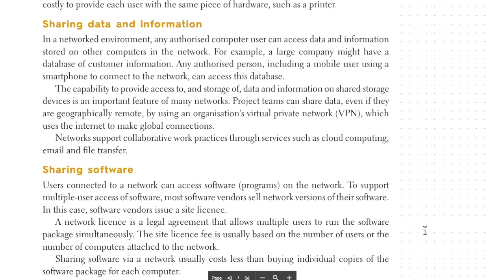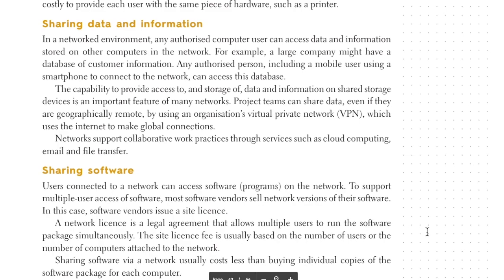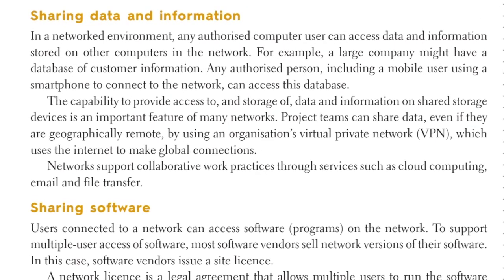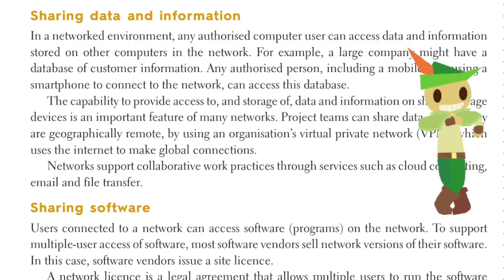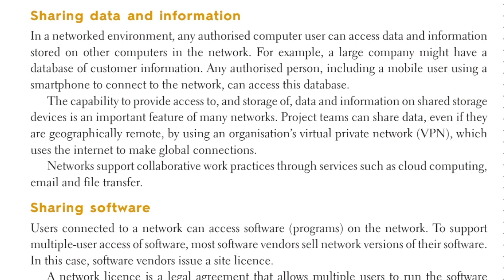Sharing data and information: in a network environment, any authorized computer can access data and information stored on other computers in the network. For example, a large company might have a database of customer information that any authorized person — including a mobile user connecting via a smartphone — can access. The capability to provide access to and storage of data on shared storage devices is an important feature of many networks. Project teams can share data even if geographically remote by using an organization's virtual private network (VPN), which uses the internet to make global connections, supporting collaborative work practices through services such as cloud computing, email, and file transfer.